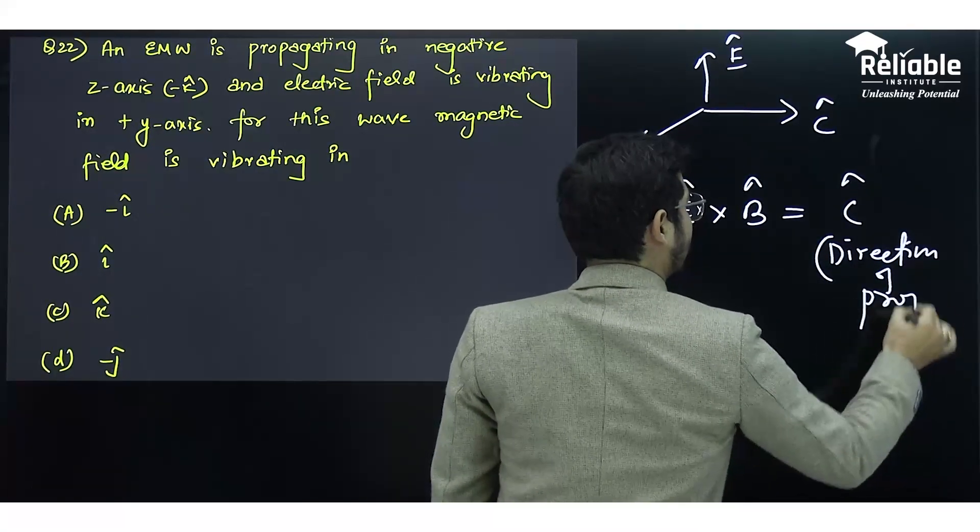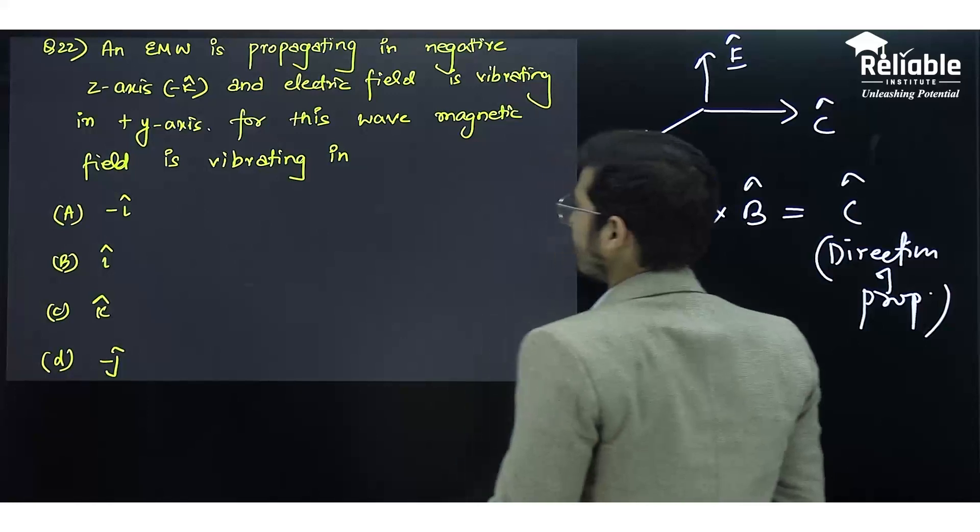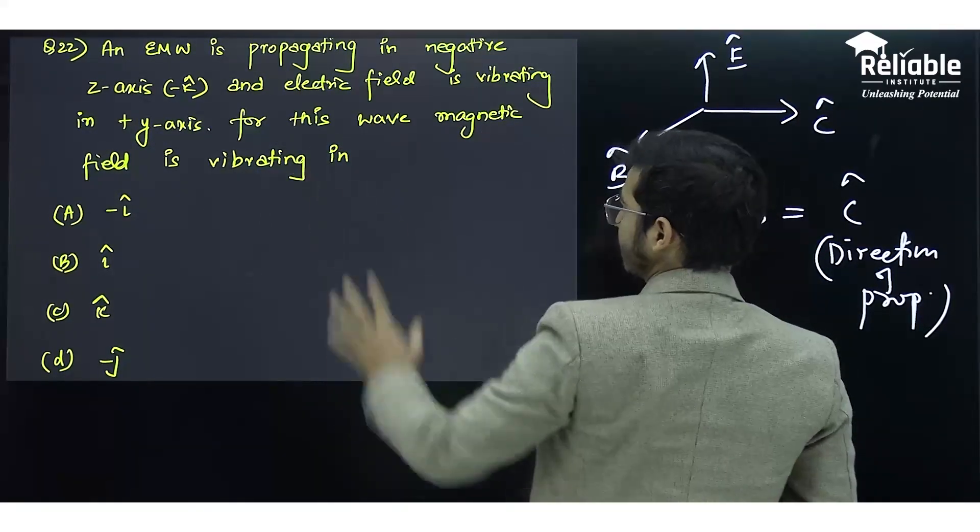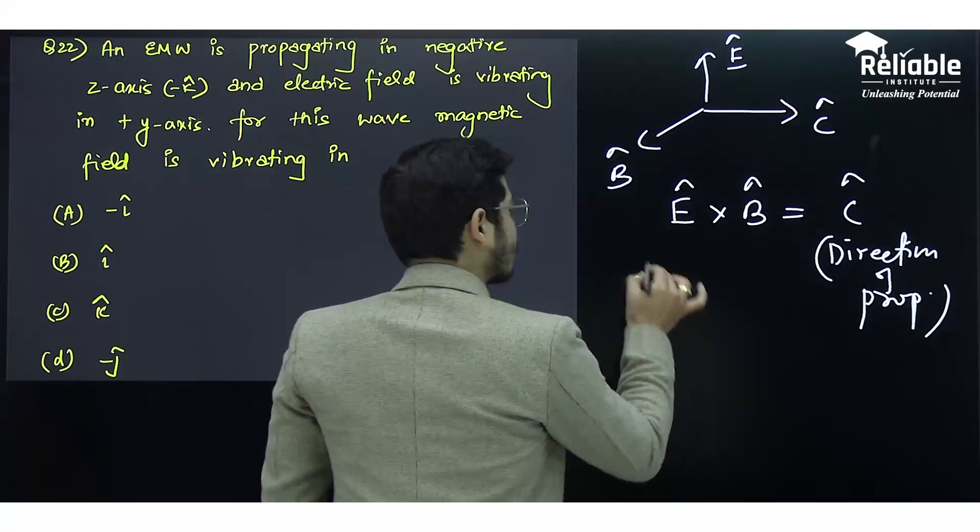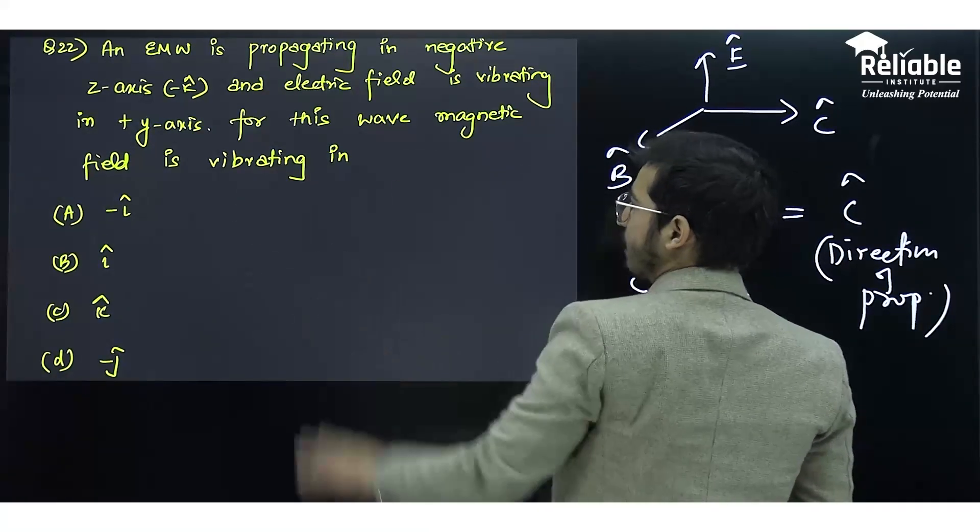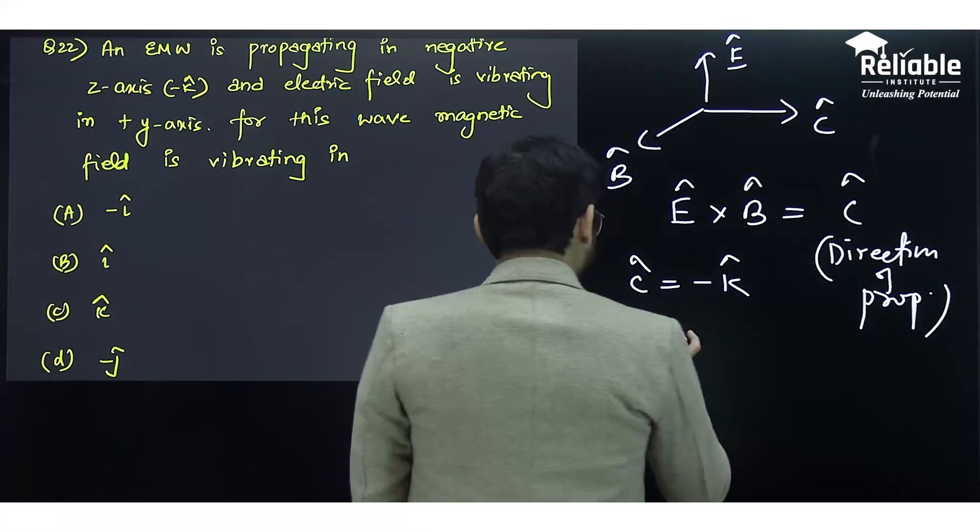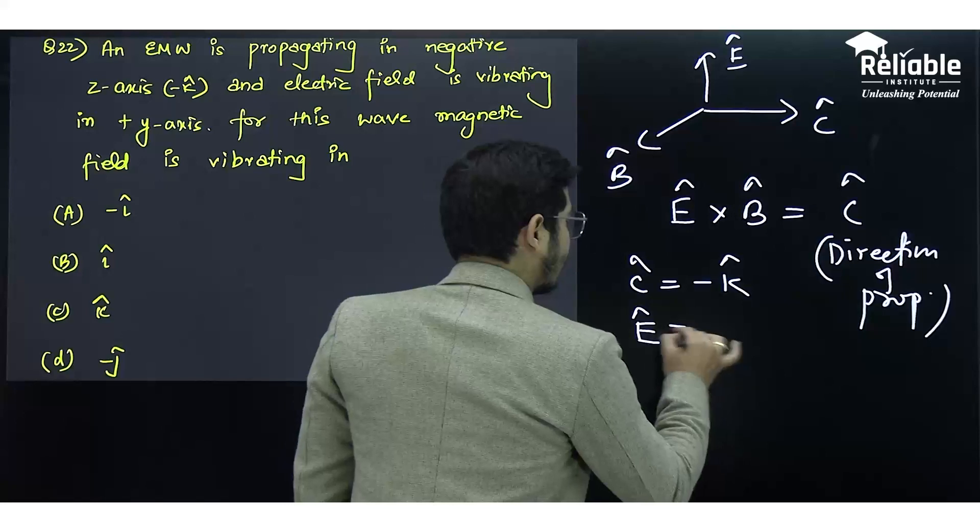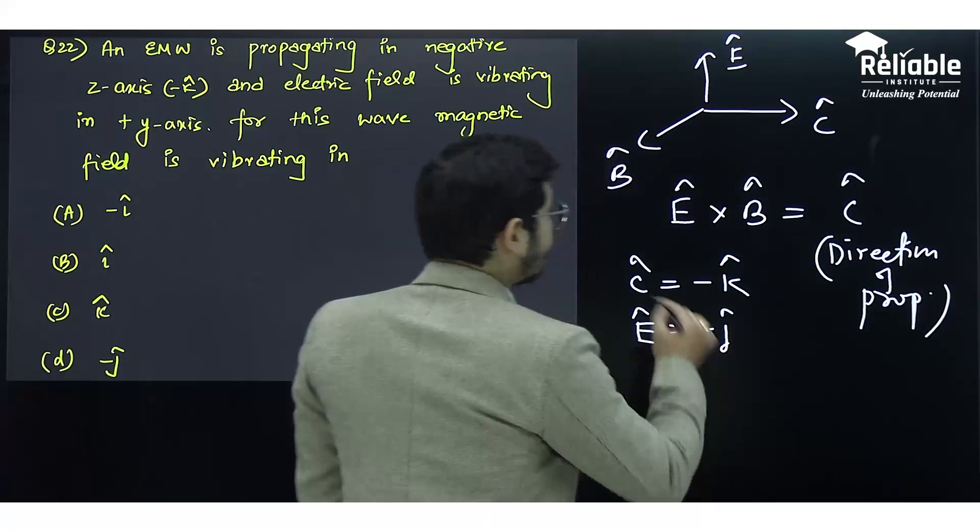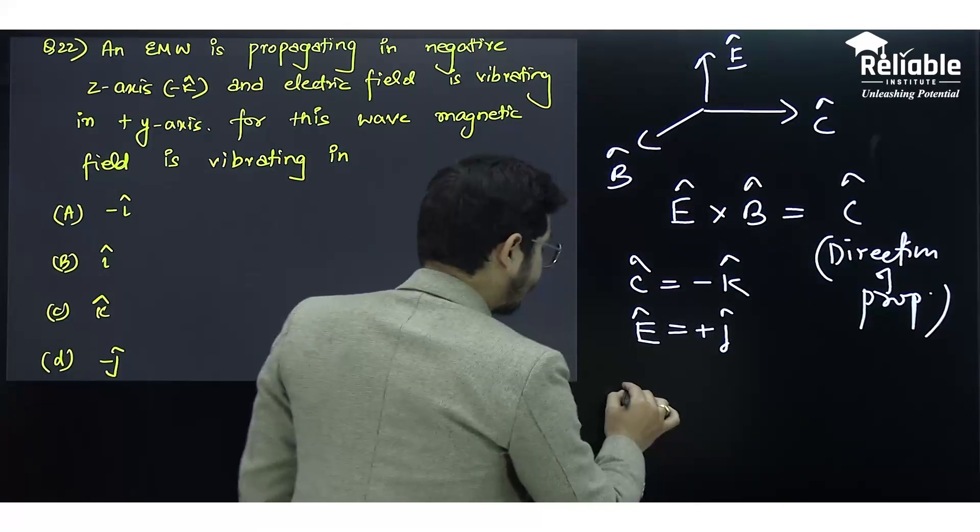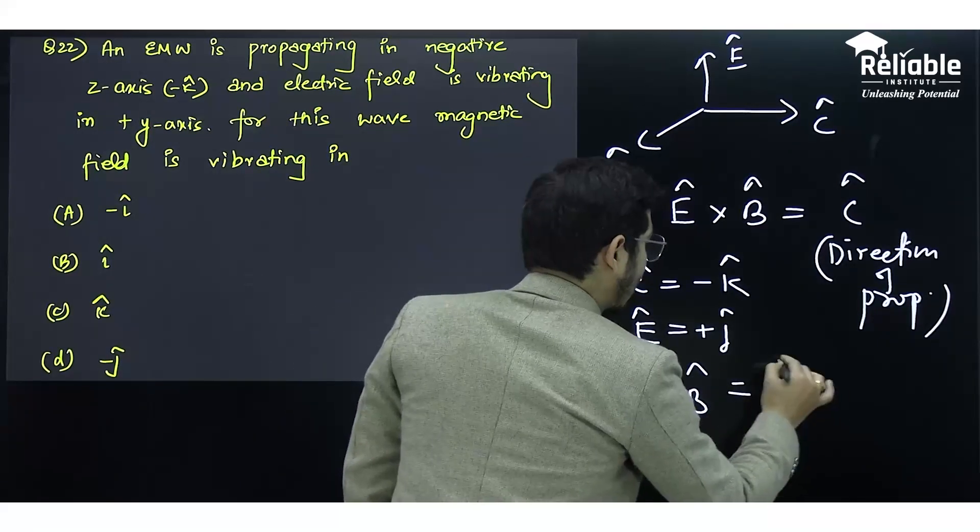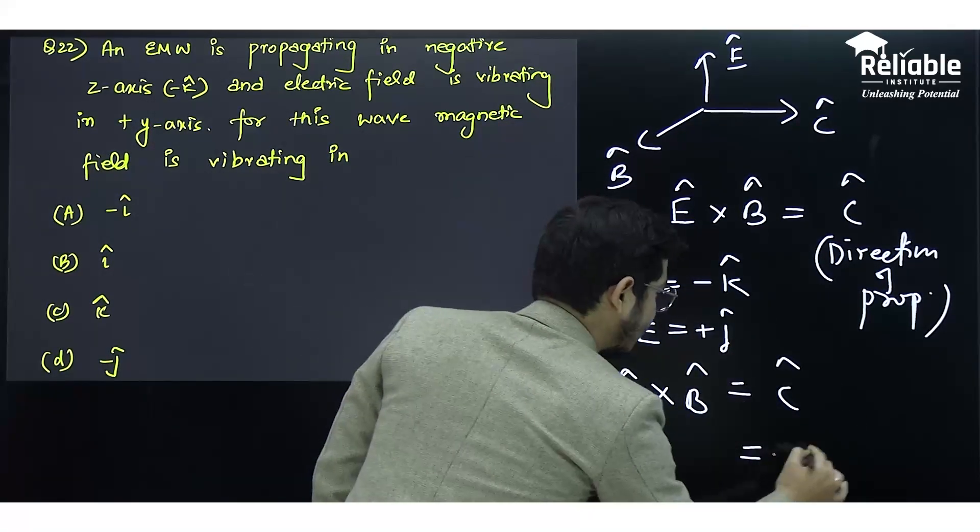What is given in the question is that the wave propagation is in the direction -k̂, so ĉ is -k̂, and the electric field is vibrating in the +y axis, so electric field is +ĵ. Now, we know Ê × B̂ gives us the direction of propagation ĉ, which is -k̂.